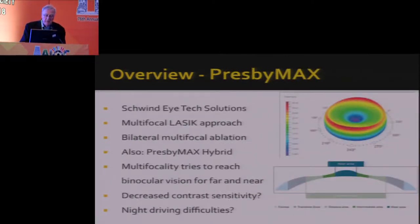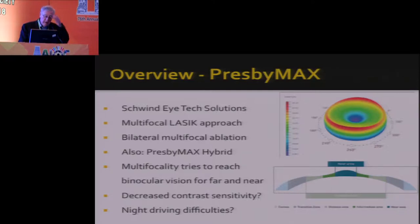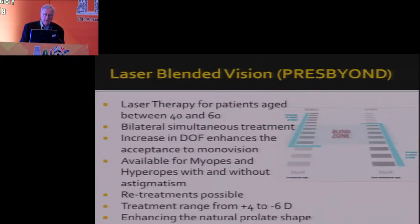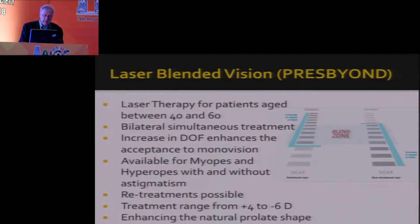The PresbyMax from Schwind Eye Tech Solutions is a multifocal LASIK approach — bilateral multifocal ablation. The PresbyMax Hybrid comes with an aspheric ablation, one eye for near and one eye for far. Multifocal focality tries to reach binocular vision for far and near but has some difficulties with night driving. Laser blended vision is for patients aged 40 to 60 — bilateral simultaneous treatment, increase in depth of field, enhancing adaptation to monovision. Retreatments are possible; hyperopic with and without astigmatism and myopic corrections are possible.